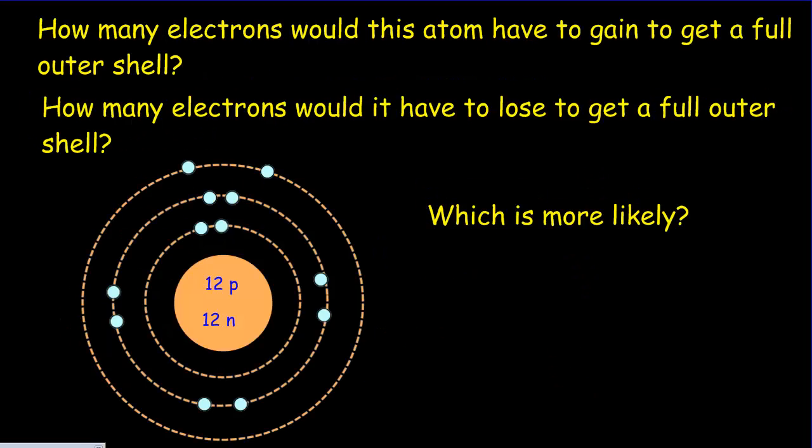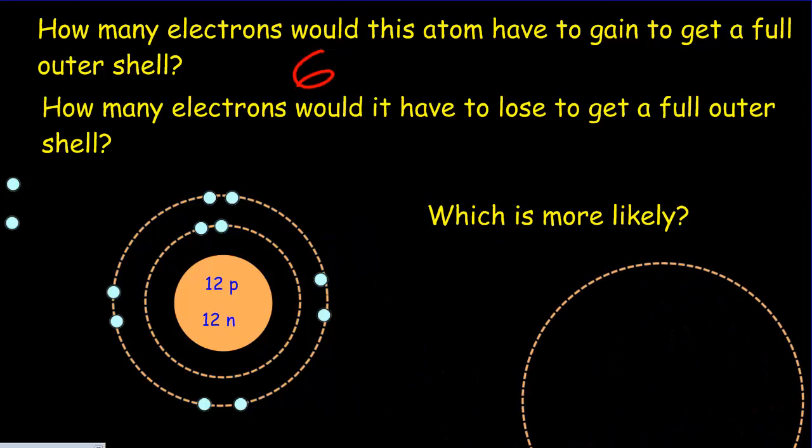Let's consider the atom below. The first question: how many electrons would this atom have to gain to get a full outer shell? Well, in the outer shell here we've got two electrons. If we're going to add electrons, we'd have to add another six electrons to complete that shell. But if we were to lose electrons, we would just have to take away two electrons, and that would eliminate our old outer shell and we'd have a new outer shell which would have eight electrons in it.